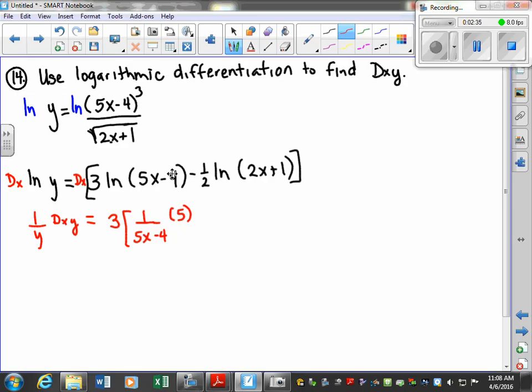Now, that's this term. And then I'm going to have minus 1 half. So I'm going to pull the minus 1 half out front. And the derivative of the natural log of 2x plus 1 is just going to be 1 over 2x plus 1 times the derivative of this inside term. What is the derivative of that? Just 2. Good.